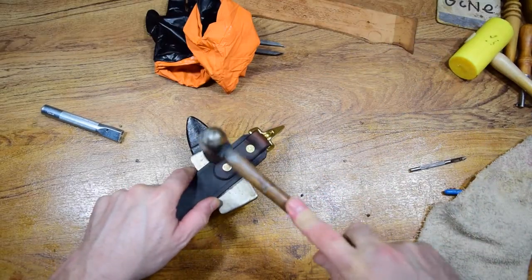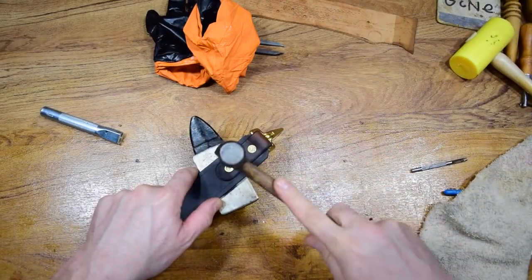Then using the set side of the rivet along with the ball peen hammer, round over the pin and secure the rivet in place. You're trying to mushroom the pin over the washer. That's where the strength and holding power comes from.